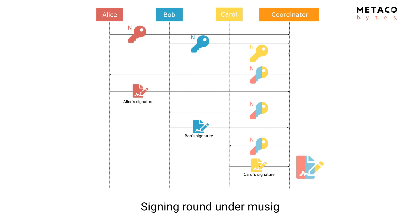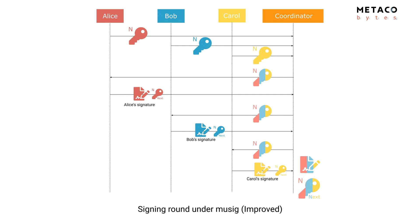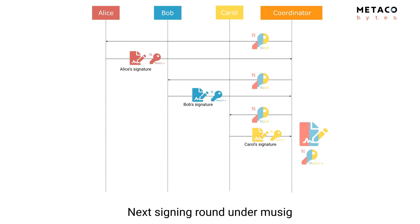An improvement is that instead of a separate nonce-sharing round, when participants send their signature they can also send the public nonce for the next signing session. So the coordinator already has the public nonces that everyone will use for the next round. This allows a model more in line with what we're used to: Alice can connect only one time, ask the coordinator for the combined nonce, and sign directly.